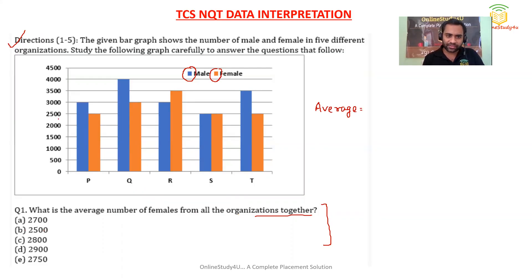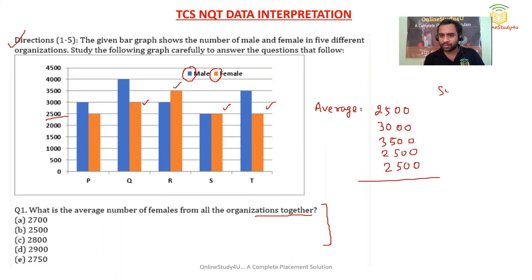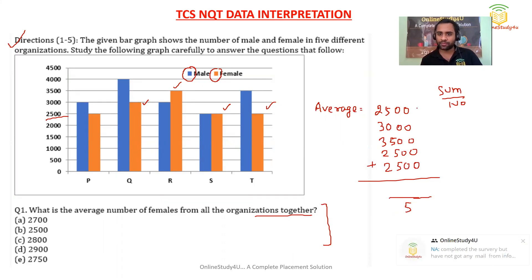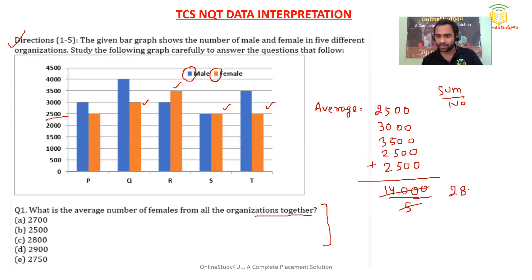In the exam, do not waste time. Reading the female values in orange: 2500, then 3000, then 3500, then 2500, and then 2500. The average is sum divided by count, so we add all values: 2500 + 3000 + 3500 + 2500 + 2500 = 14000, then divide by 5, which gives 2800. So option C is the correct answer.